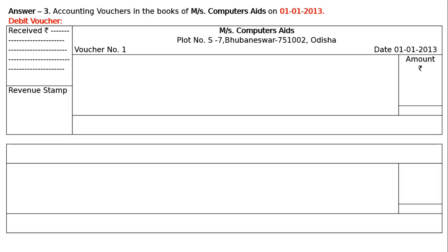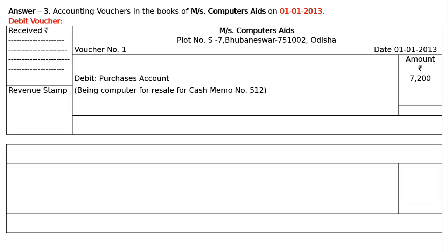Hence, debit all expenses. Debit will be done to purchase account. That is, debit purchase account, rupees 7,200. Here we are spending to buy computers — purchase account debit, it is an expenditure, increase in expenditure is debited. Narration will be: being purchased computer for resale, for cash memo number 512.